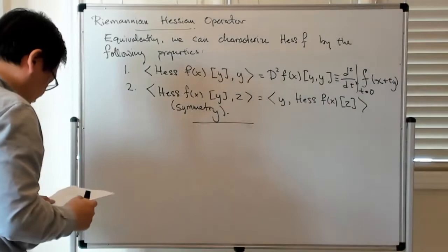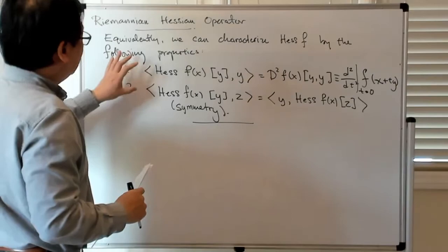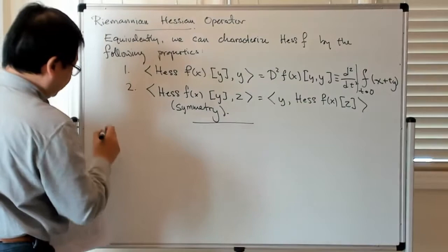So in any case with that in mind, now let's propose a definition of the Hessian operator on Riemannian manifolds and then see where we go with that. So let me just state this definition.